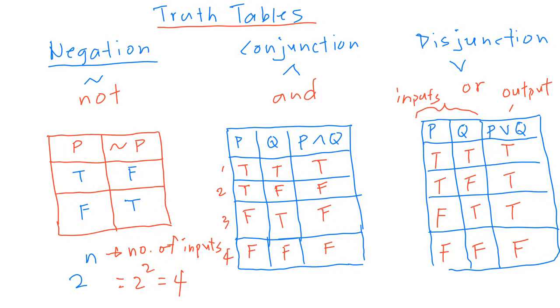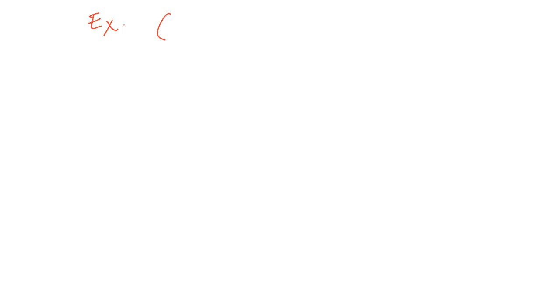Those are the three basic truth tables: negation, conjunction, and disjunction. Now let's try an example using those truth tables. You're going to be asked to construct a truth table for this expression.